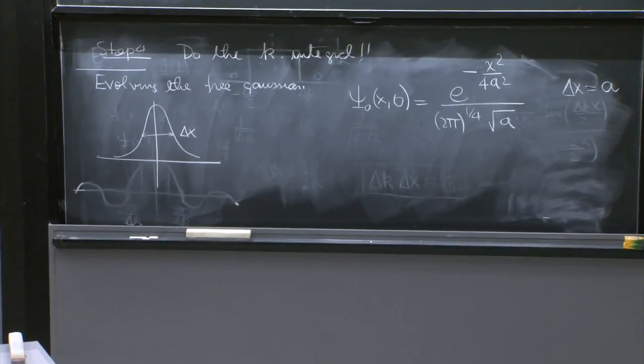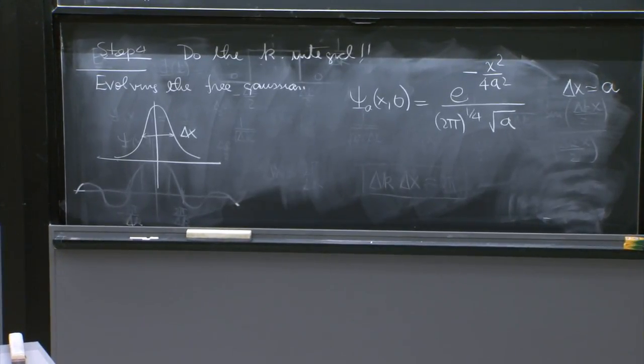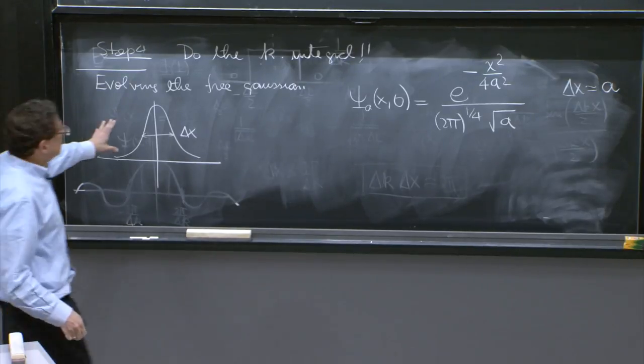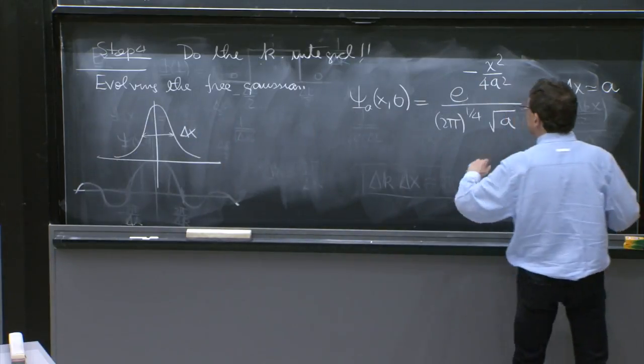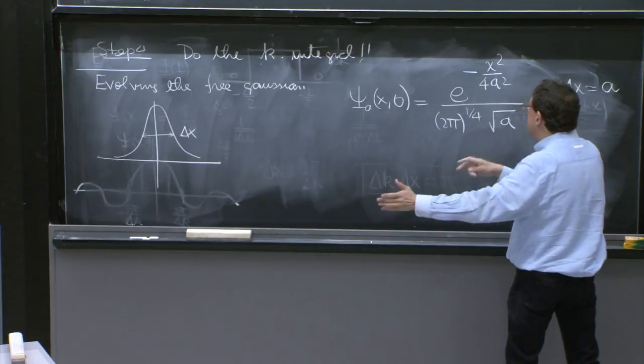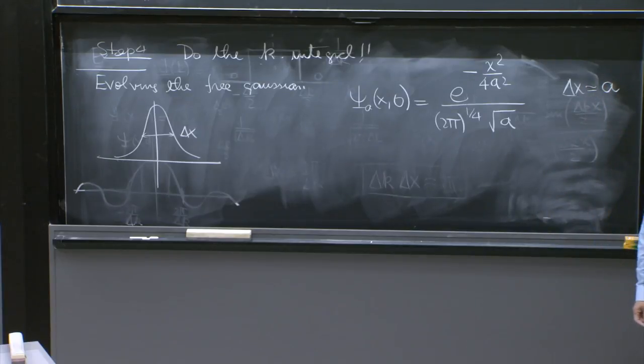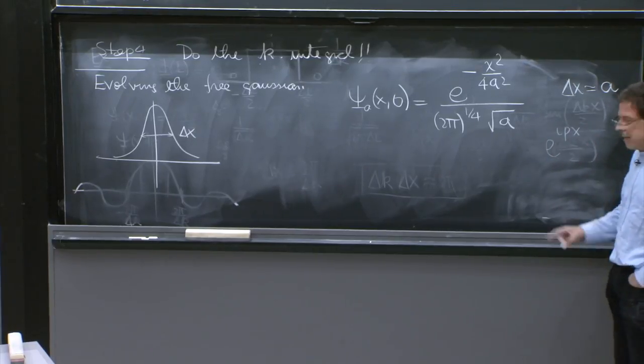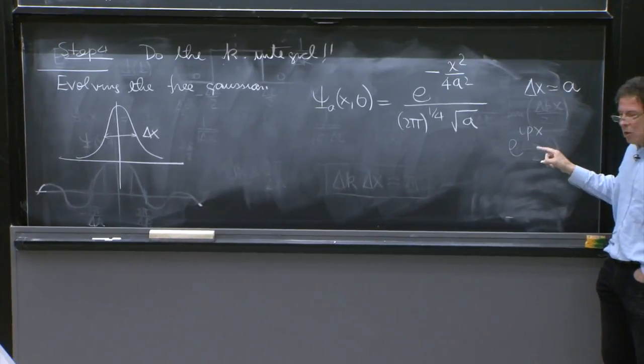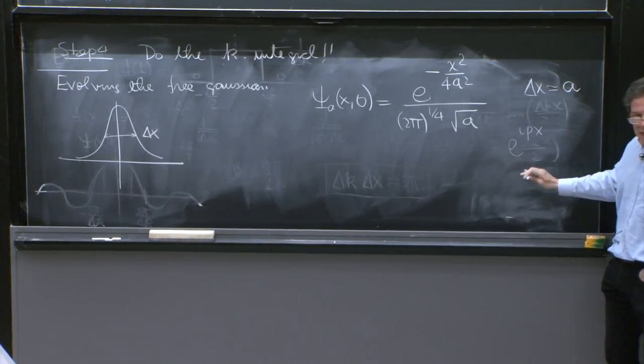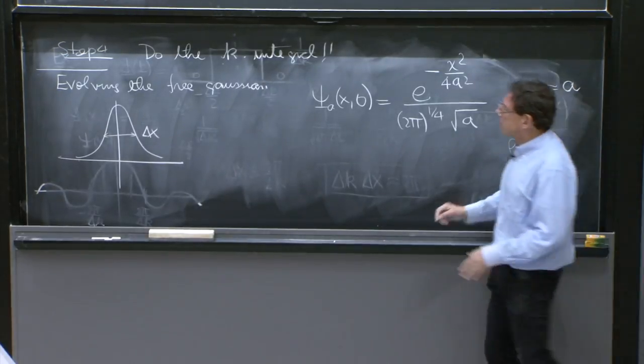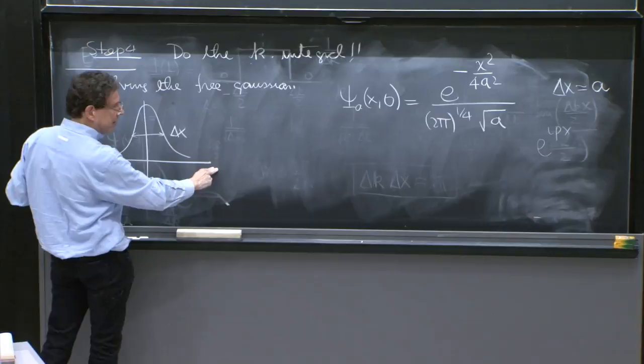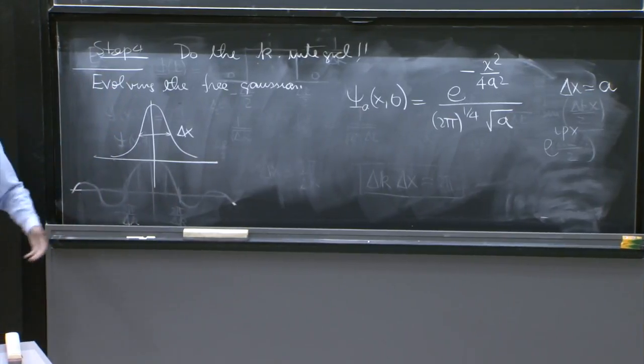And now you have a Gaussian that you have to evolve. And what's going to happen with it? This Gaussian, as written, doesn't represent a moving Gaussian. To be a moving Gaussian, you would like to see maybe things of the form e to the ipx that represent waves with momentum. So I don't see anything like that in this wave function, so this must be a Gaussian that is just sitting here.